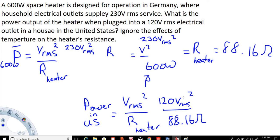So we'll have 120 and then we'll square it and divide that by 88.16. And we're going to get power in the U.S. is equal to 163.3 watts.